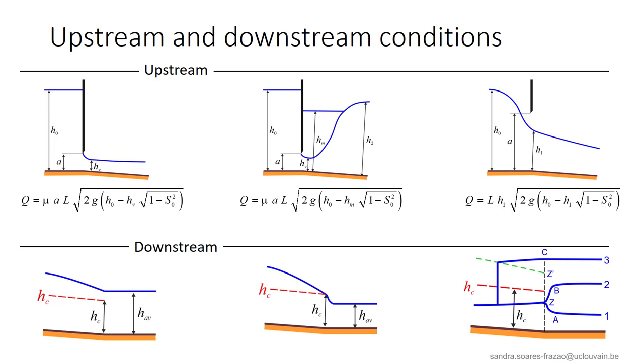All the possible upstream and downstream conditions are summarized here. As we have seen, when we are in the situation of a submerged hydraulic jump, a trial and error procedure is needed to find HM, H2 and the discharge Q. To this end, a special theorem will be helpful. This will be developed in the next lesson. Goodbye!